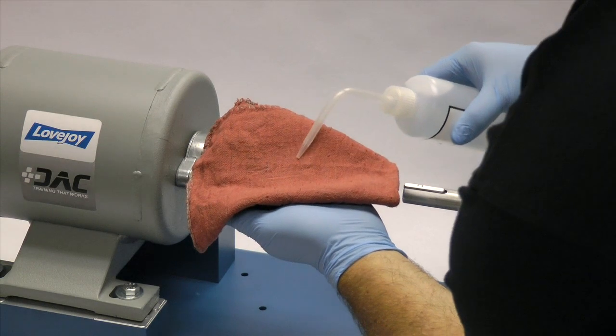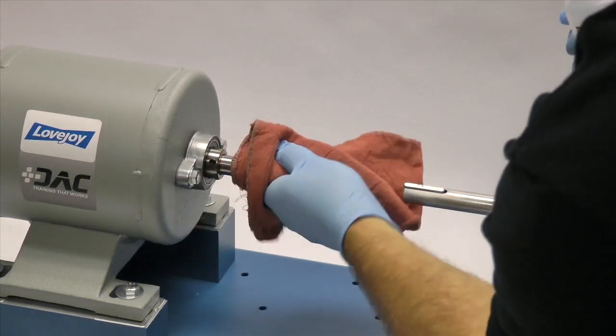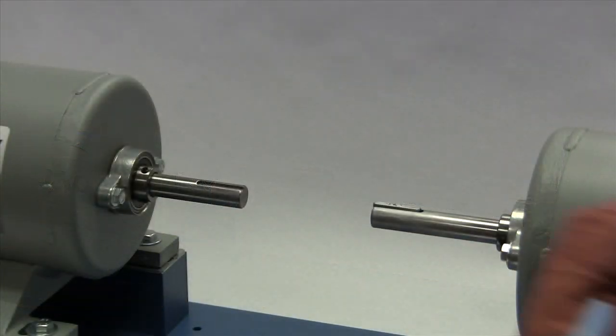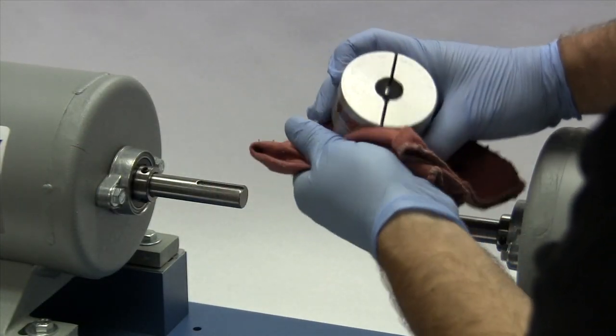Finally, using our cloth and cleaning solvent, we need to ensure the surface of the shaft and the keyway are clean and free of dirt. The hubs should also be cleaned to remove any coatings used to protect them during shipping.